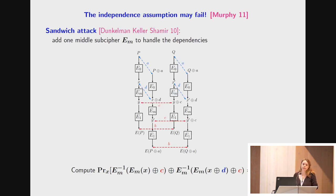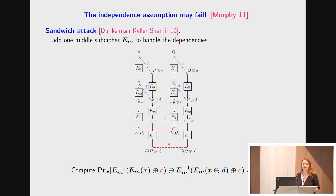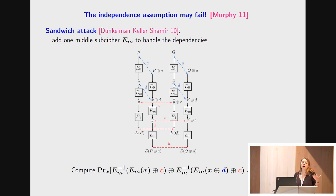The problem is that in most practical cases this independence assumption fails. This was first proved by Sean Murphy, who showed that in some practical cases the previous probability is equal to zero, and there are also some cases where this probability is much higher than expected from the previous formula.